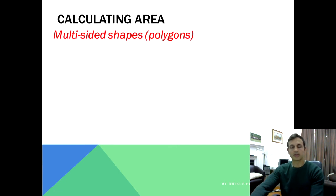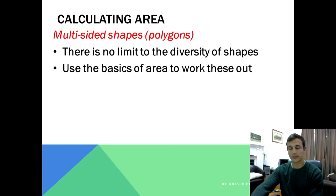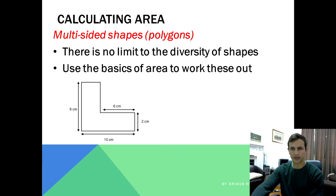So again looking at multi-sided shapes, polygons. Like I said before, there is no limit to the diversity of these shapes. And you need to use the basics of area that we have just covered to work these out. Looking at this shape like we did with perimeter, we have discussed how we can find these sides that weren't given originally. So just to go through that again.